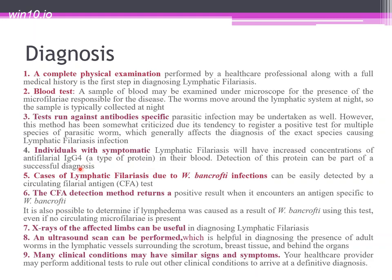IgG type 4 antibodies are elevated in filariasis. An increase in IgG4 denotes certain roundworm infections. Specific antigen tests can also be performed to confirm the diagnosis.